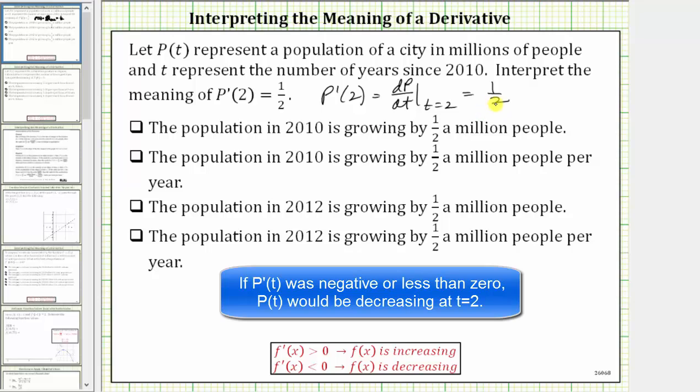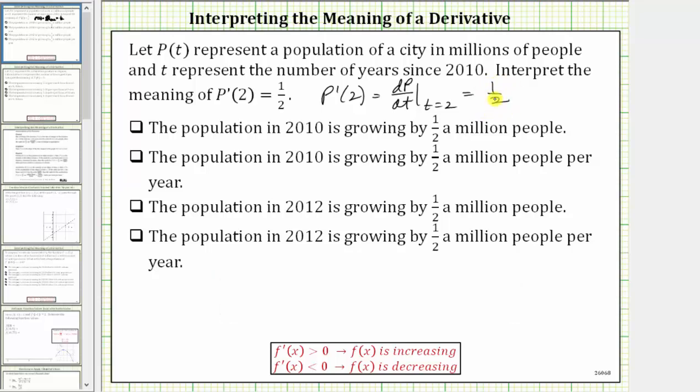Now to interpret this meaning more precisely, let's write the derivative function value of 1/2 as a fraction. I know 1/2 is already a fraction. Let's write it as 1/2 over 1. So we'll say P'(2) equals 1/2 over 1, and that will include units for the 1/2 and the 1 to better interpret the meaning of this derivative function value.